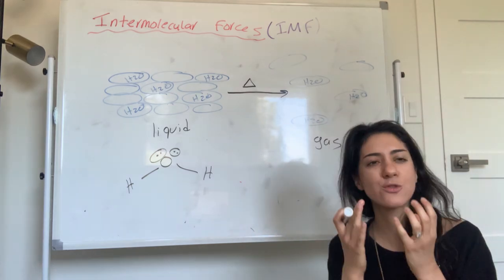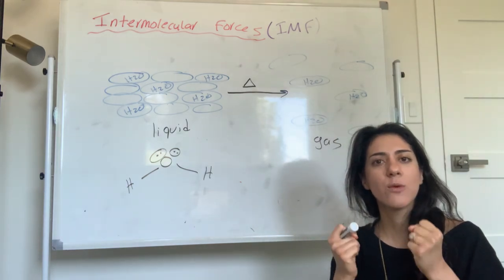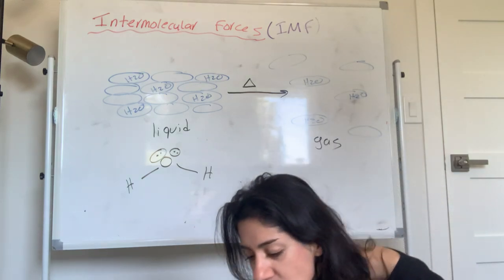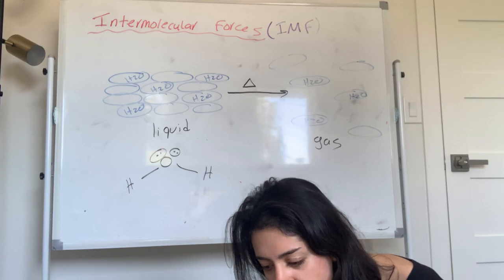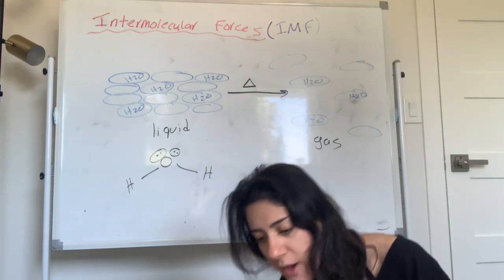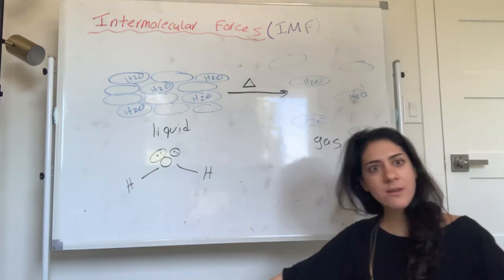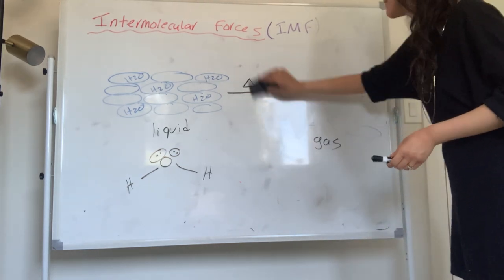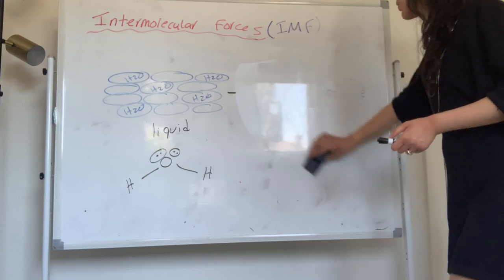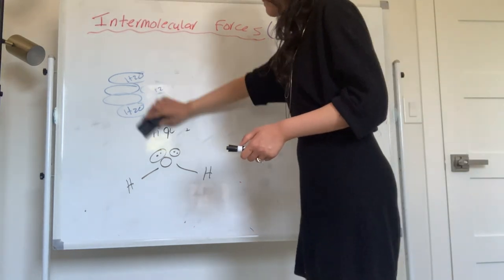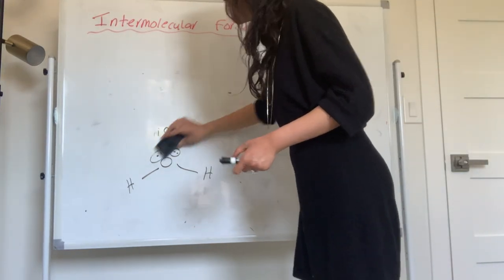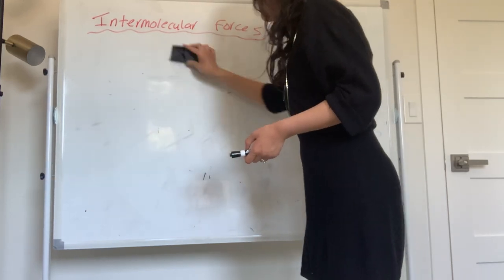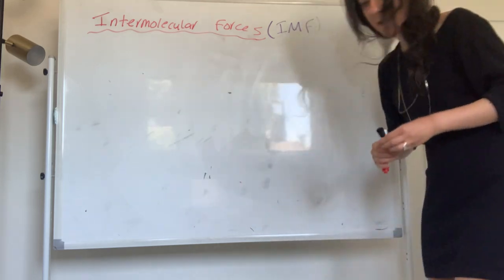Intermolecular forces is the attraction that keeps the liquid and the solid together. IMF is the attraction that keeps the liquid and the solid together. So now that you know what IMF is, we're going to go over the different types of IMF — what type of IMF is holding these water molecules together.